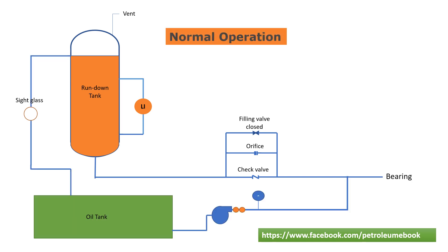During normal operation of the main equipment, the main lube oil pump keeps the lube oil supply header pressurized and maintains lube oil flow to the bearings. The run-down tank filling valve is closed and lube oil flow to the run-down tank is blocked by the check valve. This small leakage flow through the orifice plate maintains a continuous lube oil recirculation back to the lube oil reservoir through the overflow line.